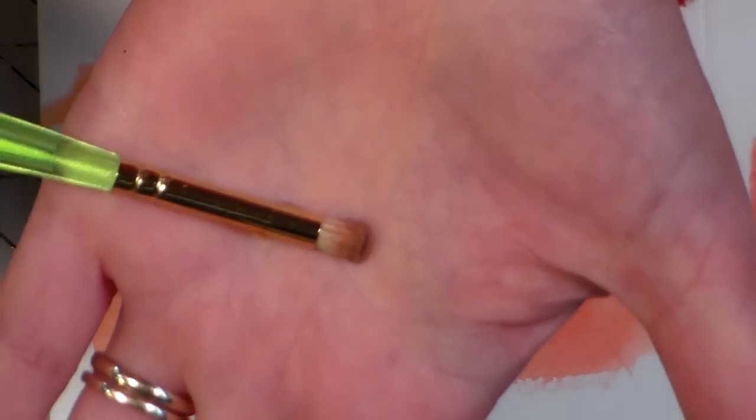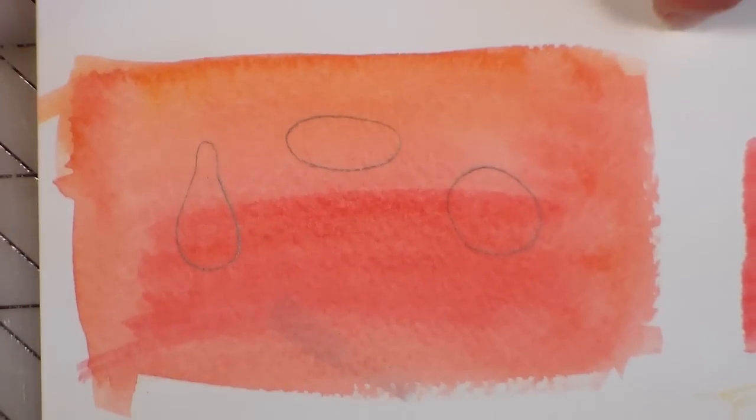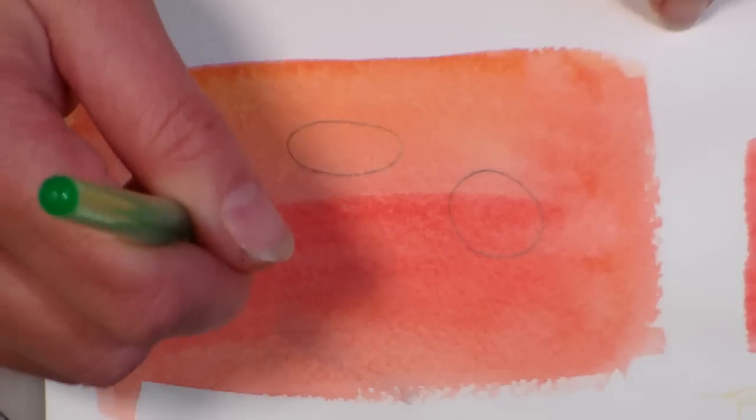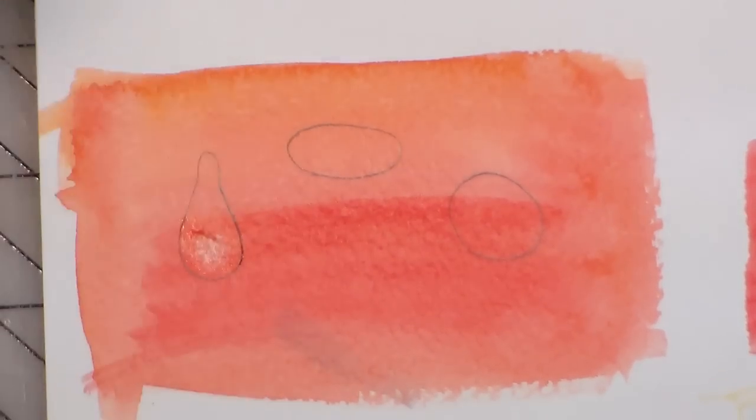I've got a stiff bristle brush here, this is just a stencil brush, and I'm gonna go in and remove color. Let's pretend the light is coming from above. We're gonna remove color actually in the bottom part of each of the drops, so you do that by scrubbing it a little bit and then blotting it.